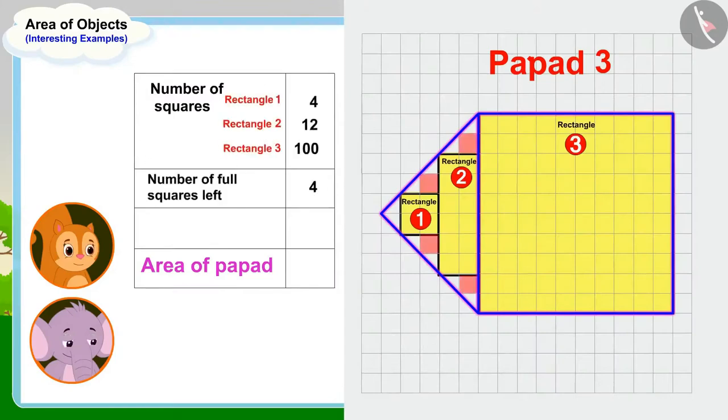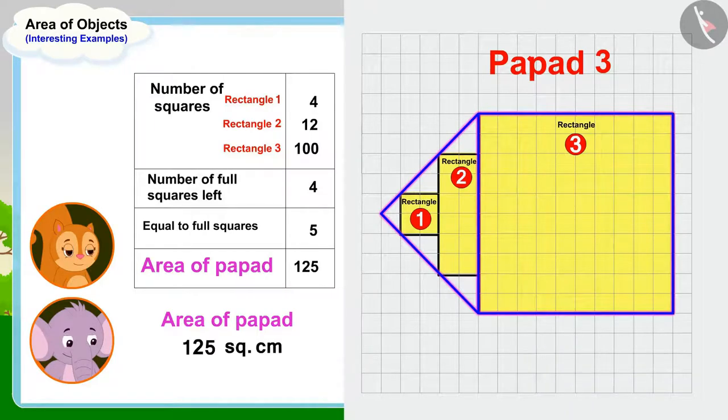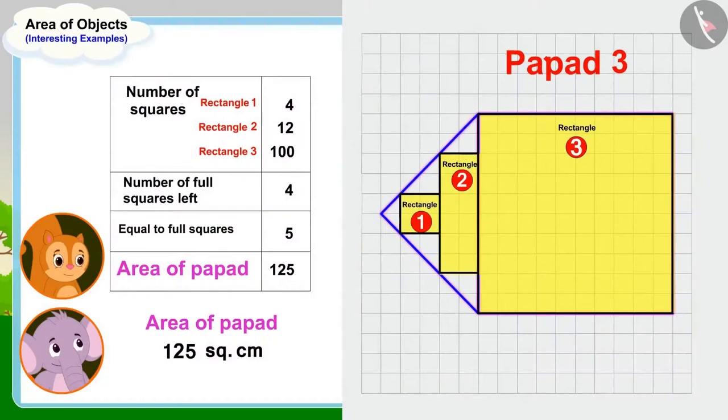We can find the area of this papar by making rectangles and squares in this way. The area of this papar is 125 square centimeters. Chanda and Appu also found the area of the third papar.